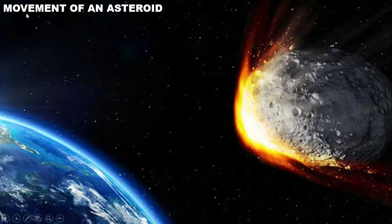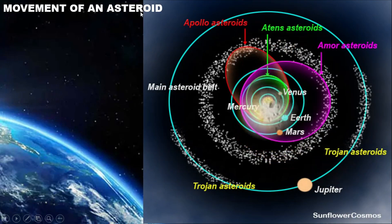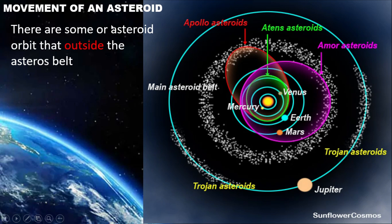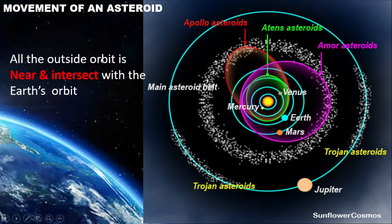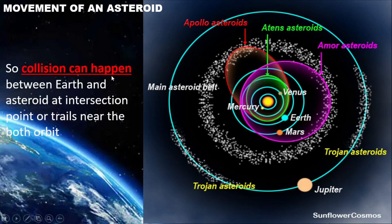Now we may look at the movement of an asteroid. As we know, there are some asteroid orbits outside the asteroid belt, such as Apollo, Athens, and Mars. All the outside orbits are near and intersect with the Earth's orbit. Collisions can happen between Earth and an asteroid at the intersection point or trails near both orbits. The intersection point is shown here.